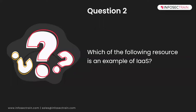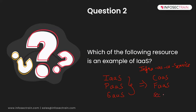Let's discuss question number two: which of the following resources is an example of Infrastructure as a Service (IaaS)? There are different types of cloud services — Infrastructure as a Service, Platform as a Service, and Software as a Service — these are the three basic ones. Apart from these, you may have heard of Container as a Service, Function as a Service, and Security as a Service, which are also terms we hear very frequently nowadays.